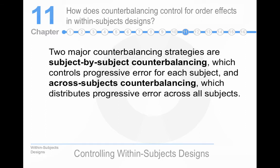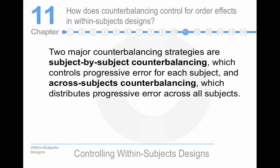How do we do it? The two major strategies are subject-by-subject counterbalancing, which I've never seen used in reality. It only exists in textbooks. Or across-subjects counterbalancing, which is pretty much used exclusively. But, let's talk about both.